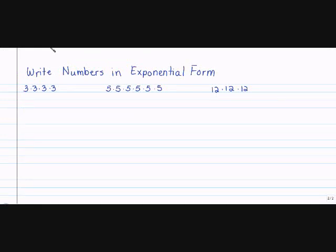Write Numbers in Exponential Form. Exponential Form is when it has an exponent — basically you want to shorten it. So if I write 3 times 3 times 3 times 3 in exponential form, I first need to know my base, which is what we multiply over and over again — that's 3. Then I count how many 3's I have: 1, 2, 3, 4 — and that's my exponent, so it's 3 to the fourth power.